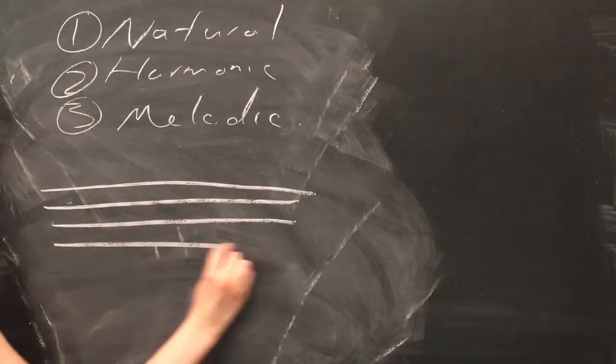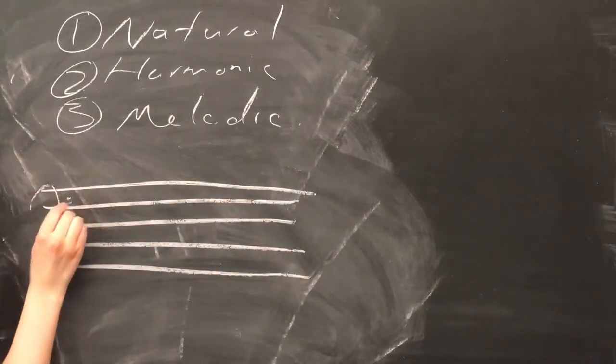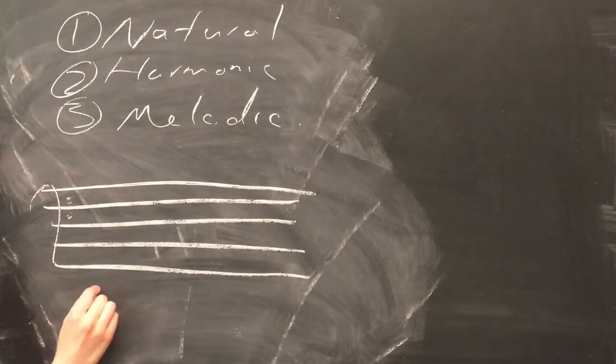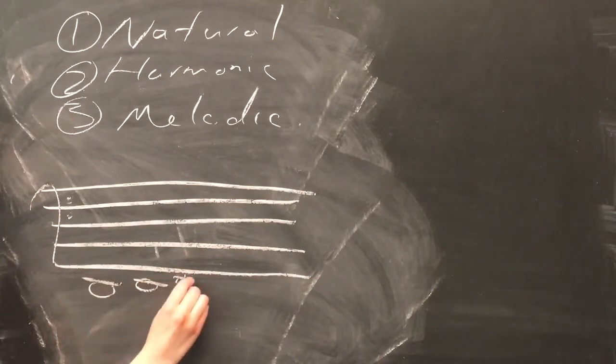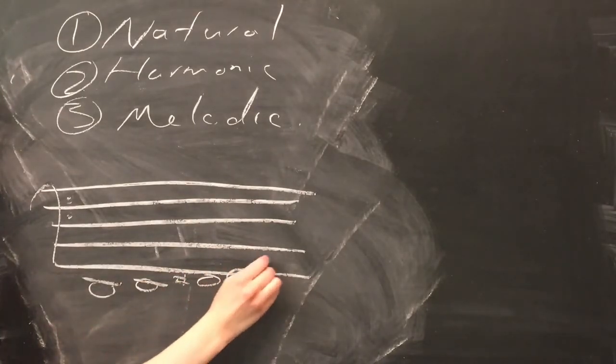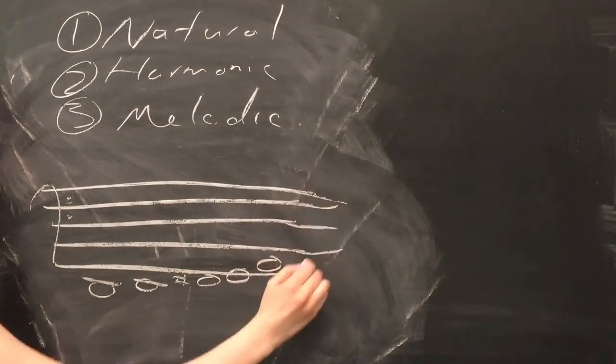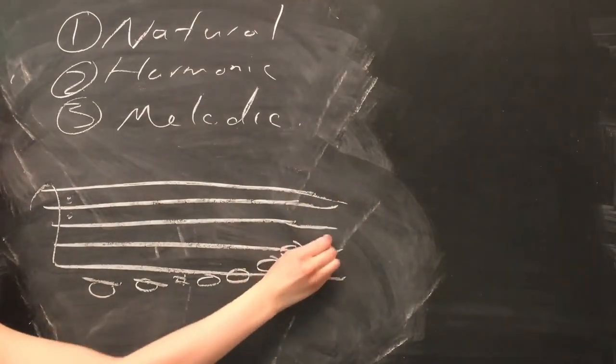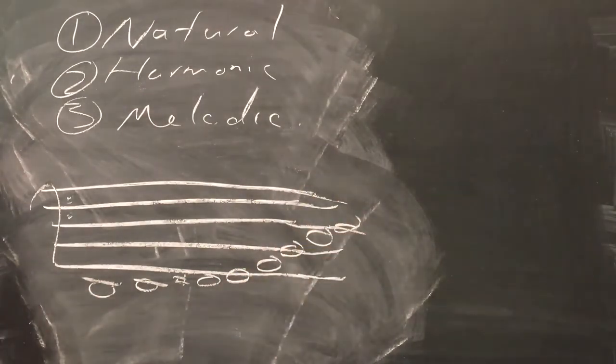A major scale's relative minor starts on the sixth scale degree of the major scale. For example, here we have a D major scale that I'm drawing. And as you can see, the sixth scale degree is B, so the relative minor of D is going to be B. So we have B minor.